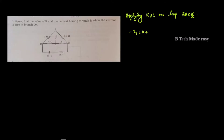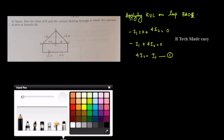We substitute into the resistor. This gives us: minus i1 plus 4i2 is equal to 0. That is, 4i2 equals i1. So i1 will be equal to 4i2. That is equation number 1.